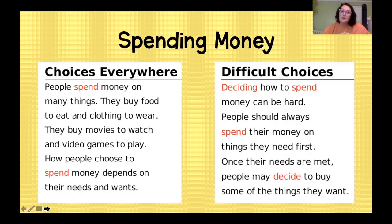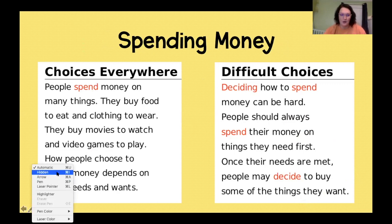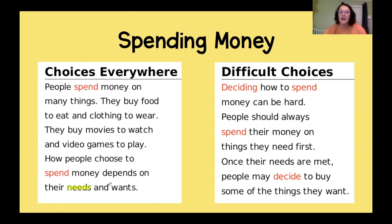Let's talk about spending money. There are choices everywhere — people spend money on lots of different things. They buy food to eat and clothing to wear. They buy movies to watch and video games to play. How people choose to spend money depends on their wants and their needs. We've talked about needs and wants — we know what those are. A lot of times the way we spend our money is decided by what we need and what we want.